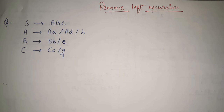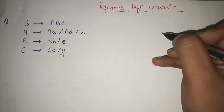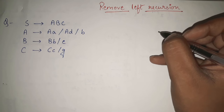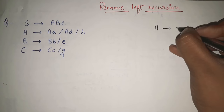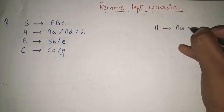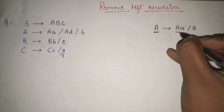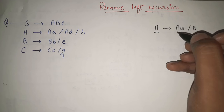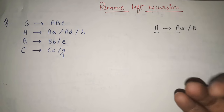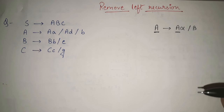Removing left recursion is very important. First of all, what is left recursion? Whenever we are having any production in any CFG, that is context free grammar, whenever we are having any production like A gives A alpha or beta, this A is again called here. So this is actually known as recursion. Normally, as we know in terms of our programming, what recursion means is whenever any function is calling itself, that is known as recursion.